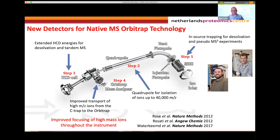We worked together with Thermo Fisher and developed a new generation of orbitrap mass spectrometers. The first one was called the EMR, the orbitrap with extended mass range. And in 2017 we co-developed the UHMR, which stands for ultra high mass range orbitrap mass spectrometer. The instrument doesn't look that different from a standard orbitrap, except that there are several modifications in RF fields to get better transmission of these slow, high-mass ions. A special quadrupole is also included that can select high mass ions at high m/z for further experiments downstream.